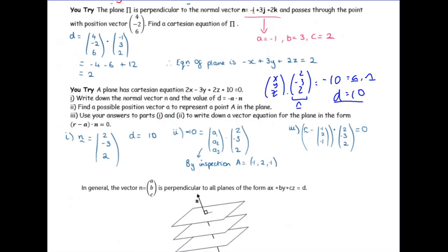You need to pick coordinates for a such that a dot n = −10. For example, (−5, 0, 0) would work, or (0, 0, −5), or the solution given: (−1, 2, −1). For part three, write the vector equation in the form (r − a) dot n = 0: n is the normal vector and a is a point it goes through. Planes with the same normal vector — or multiples of it — are all parallel, since they're all perpendicular to the same direction. To find a parallel plane through a different point, just use that new point as a.